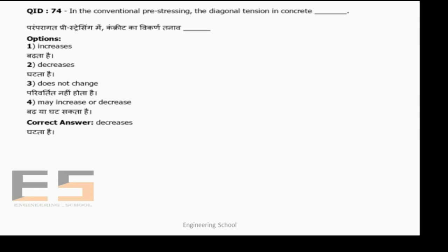In conventional prestressing, the diagonal tension in concrete decreases.